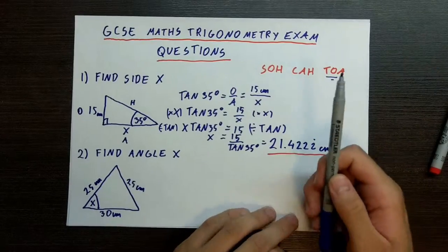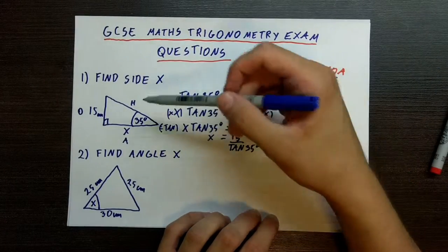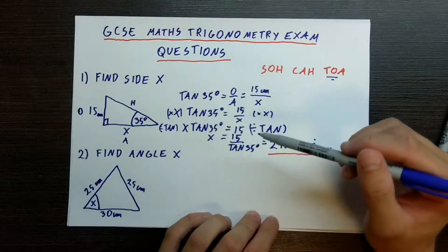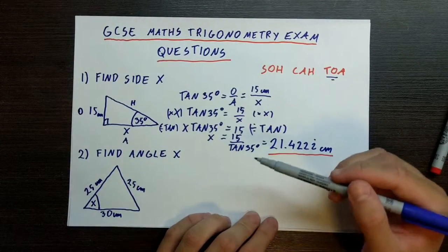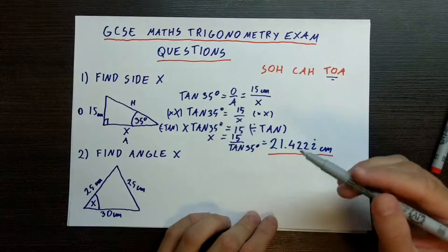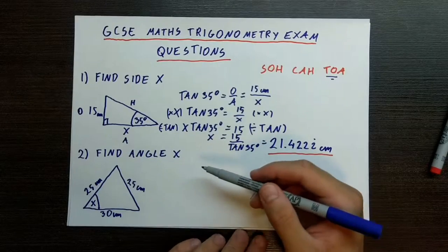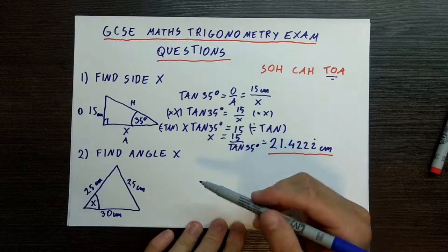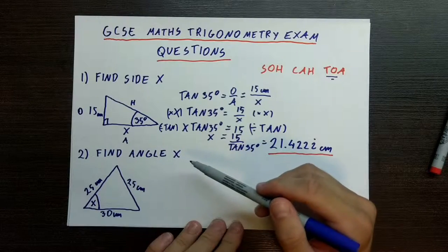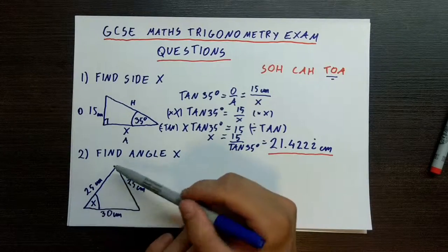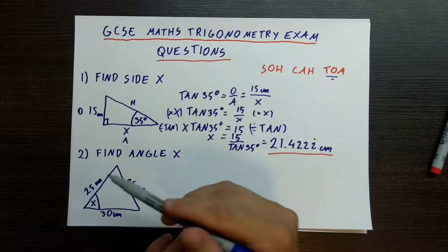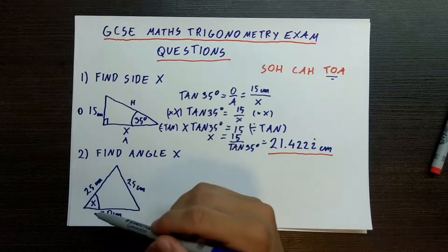The challenge here was to choose the right formula, then apply it and rearrange it the right way to get the information we want. And that is how you find side x. Now let's move on to a slightly more involved question, where we need to find the angle x. So we have a triangle here — 25 centimeters, 25 centimeters, and 30 centimeters — and we need to find angle x.